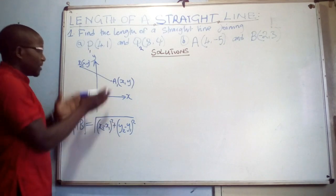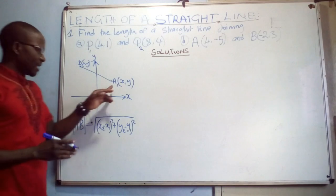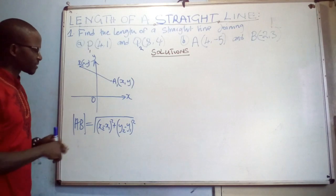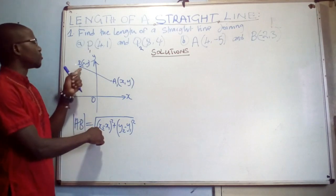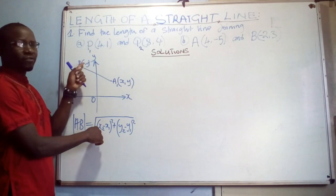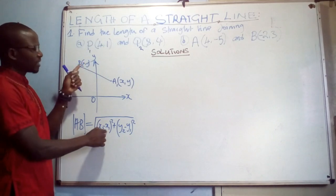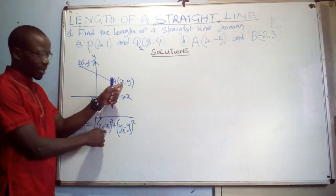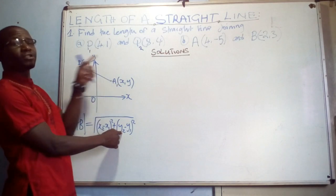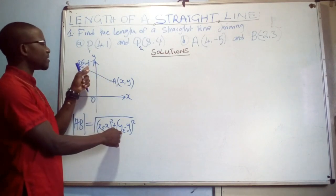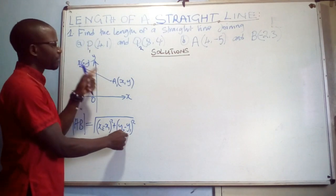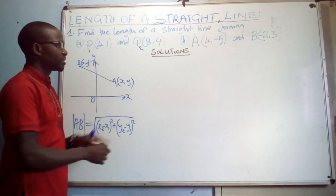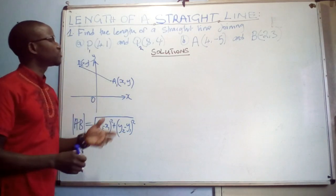For the two coordinates given, I labeled the first as point one and the second as point two. This means x₂ comes from point two, x₁ comes from point one, y₂ comes from point two, and y₁ comes from point one. We have two questions: find the length of a straight line joining P and Q.